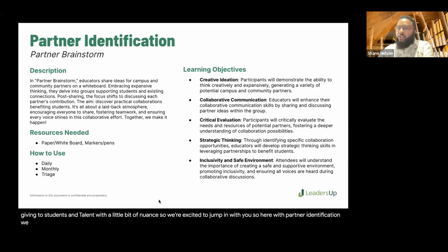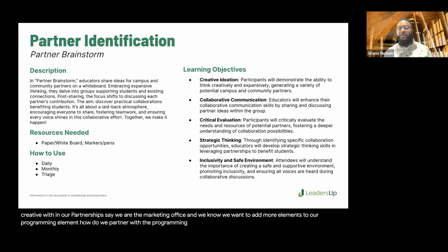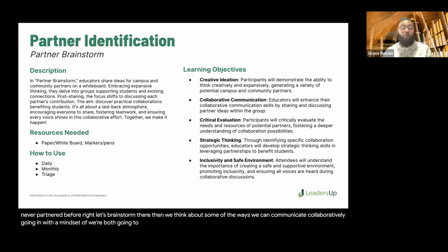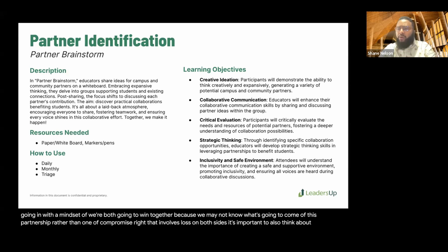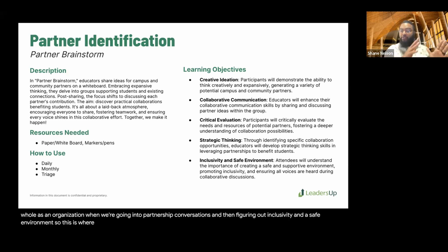With partner identification, we really want to start off with a partner brainstorm — thinking about what are the different areas we can get creative with in our partnerships. Say we are the marketing office and we want to add more elements to our programming. How do we partner with the programming office? How do we partner with an office on campus we've never partnered with before? Then we think about some of the ways we can communicate collaboratively, going in with a mindset of we're both going to win together, rather than one of compromise that involves loss on both sides. Partner identification for talent looks more like: who are the organizations within your ecosystem that can help you get to that next step?